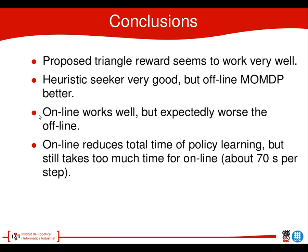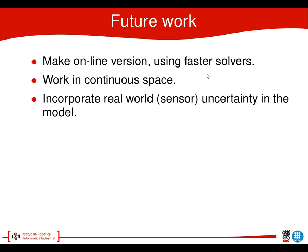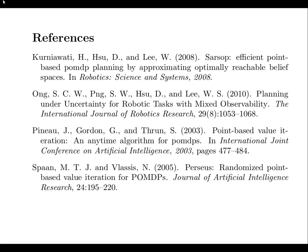In conclusion, the triangle reward works really well. The heuristic is very good, but the offline method is still better because the offline method does have memory, whereas the heuristic version does not. The online method works well, but the big issue is that it takes quite some time to calculate the policy — each step took on average 70 seconds for the 12×12 map. This is something we need to improve using faster solvers. We would also like to work in continuous space, and for the real-world experiment we should incorporate uncertainties due to sensor information in the model. Thank you for your attention.